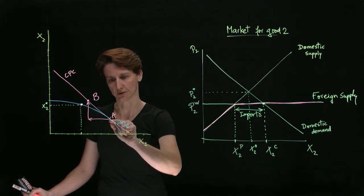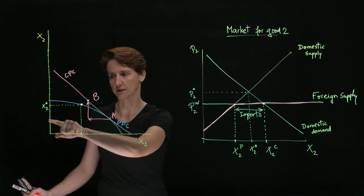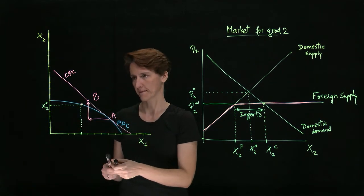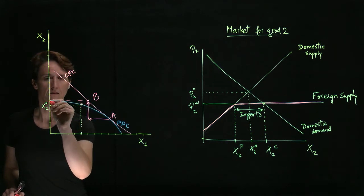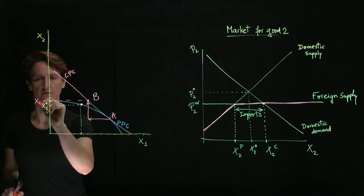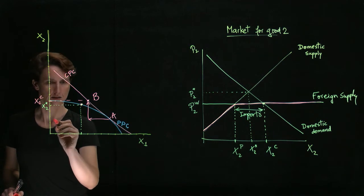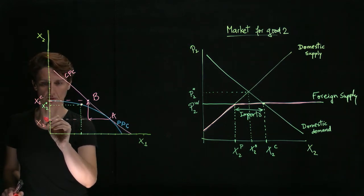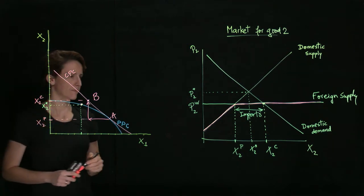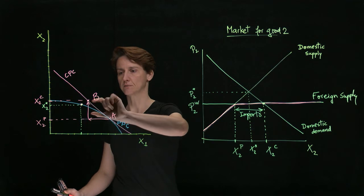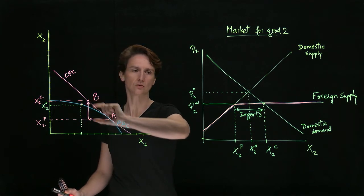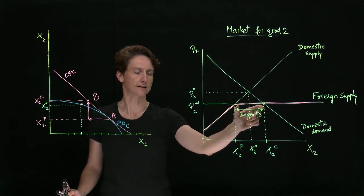The amount produced in the country will decrease. So this would be X2C, and this would be X2P. That's these two. The difference between them is the amount of imports of good two, and that is this segment in this graph.